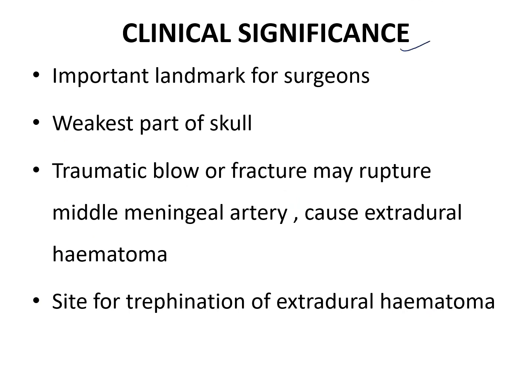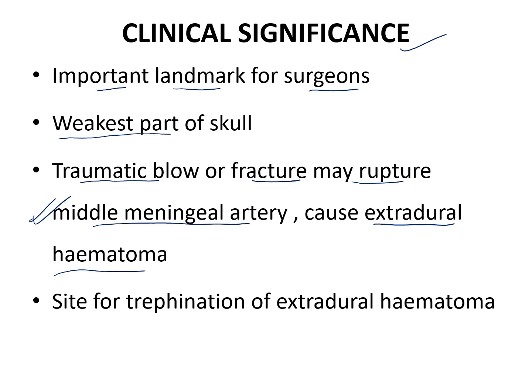What is the clinical significance of the Pterion? It serves as an important landmark for surgeons. Because it is a meeting point of four bones — frontal, parietal, squamous part of temporal, and greater wing of sphenoid — four bones joining in this place makes it the weakest part of the skull. If there is any traumatic blow or fracture to the Pterion, it may rupture the middle meningeal artery, because beneath the Pterion you have the anterior division of the middle meningeal artery.